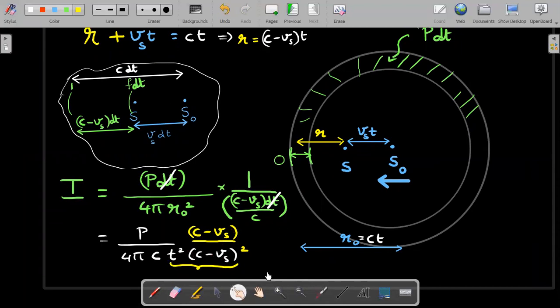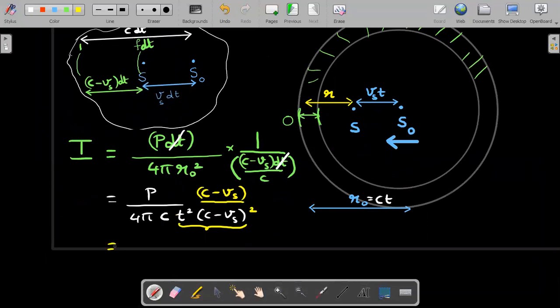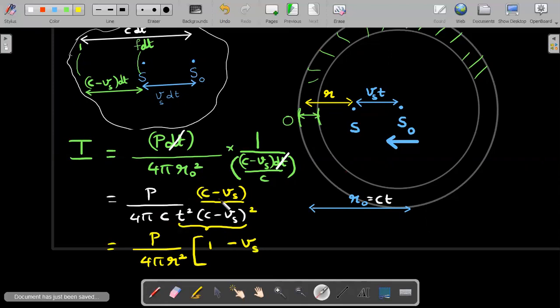The minus in the final answer that we have is not telling us that the intensity is reduced. It's just because the answer is being represented in terms of this distance R, which is not the radius of the wavefront that this fellow will receive. That is the catch. The answer is perfectly alright, given in the book. Four pi R square, and then you have that one minus Vs divided by C. This is the required answer.